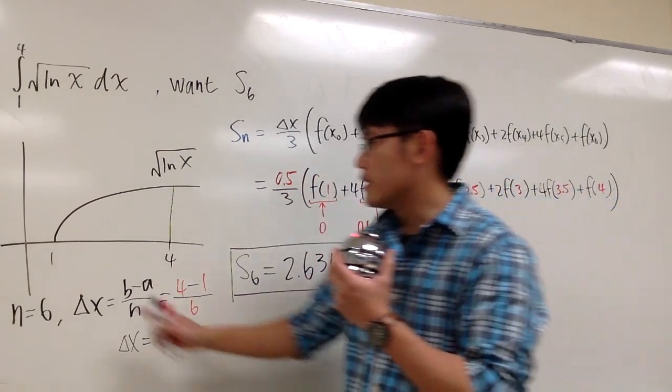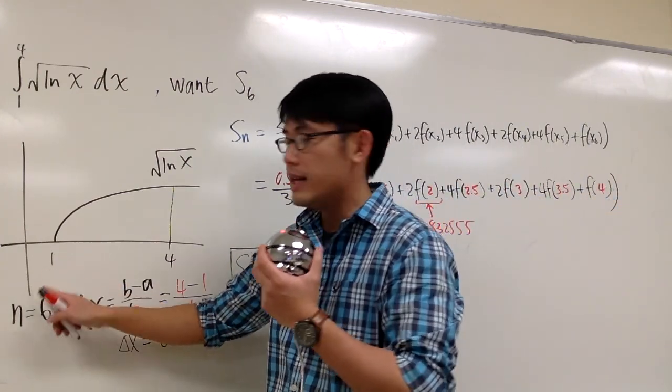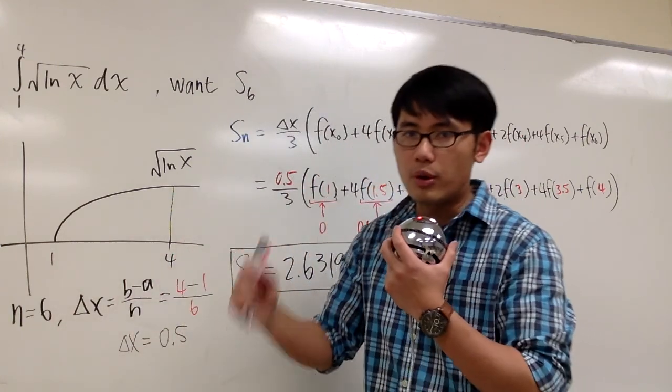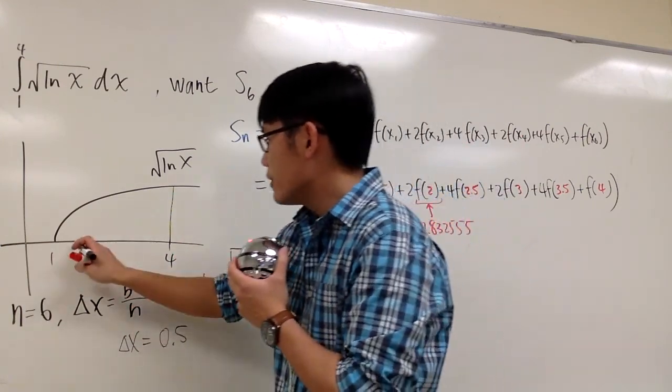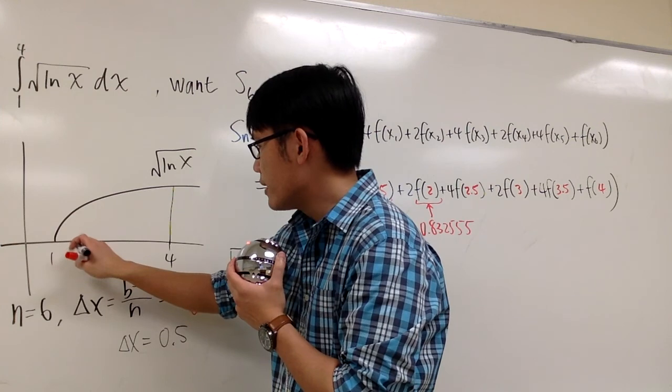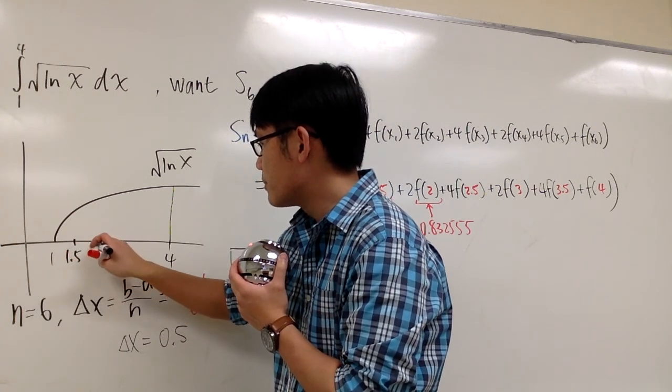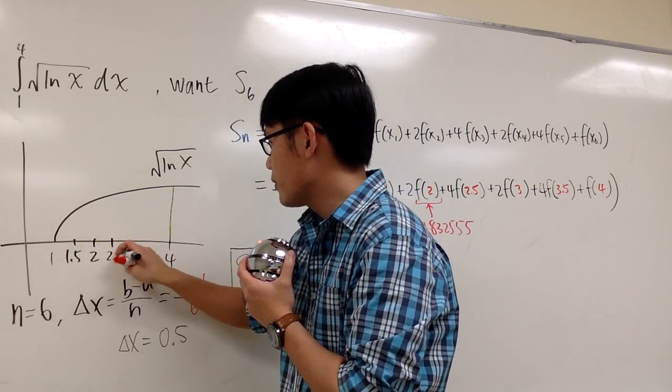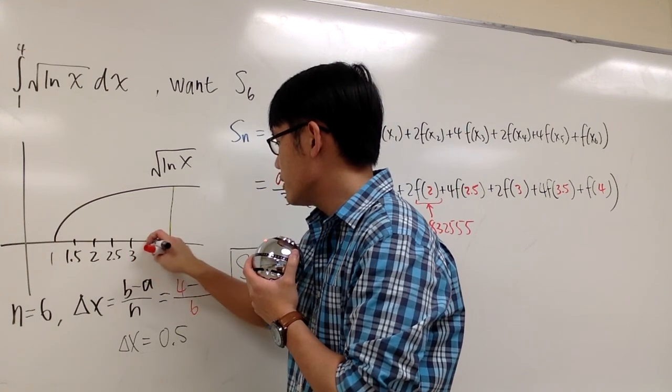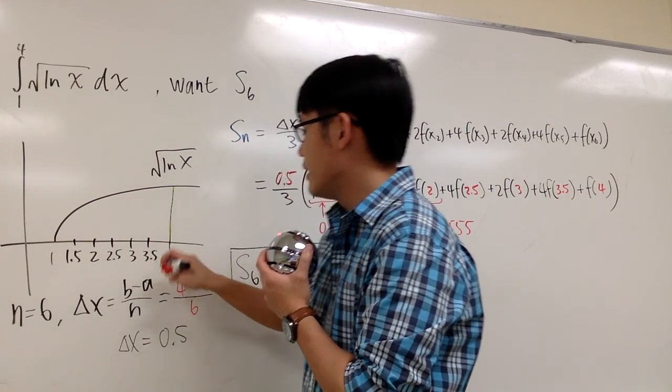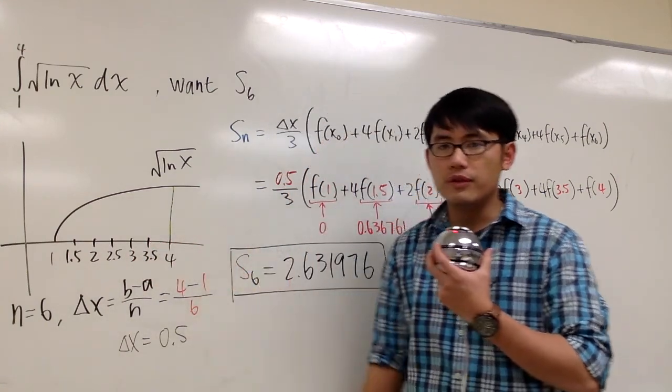So what that means is you are going to start off with 1 and go up every 0.5 units. So the first number is 1, the next is 1.5, then 2, then 2.5, then 3, then 3.5, and finally you reach 4.